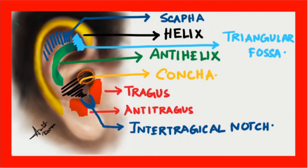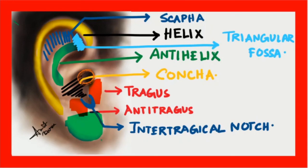Just behind the concha, or through the concha, we have the opening of the external auditory canal. One part I almost forgot to mention is that we have another part of the pinna which is mostly fatty tissue — the region where women wear earrings. This region of the pinna is known as the lobule.